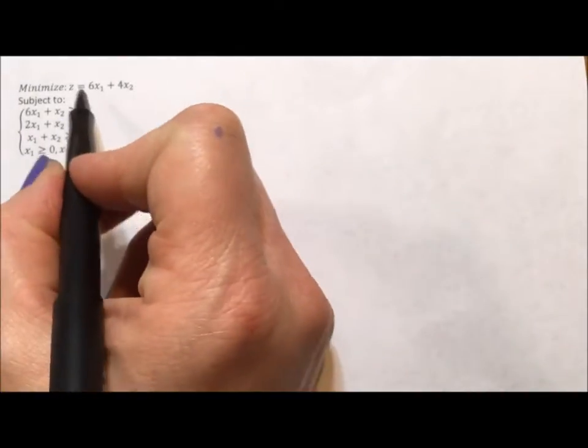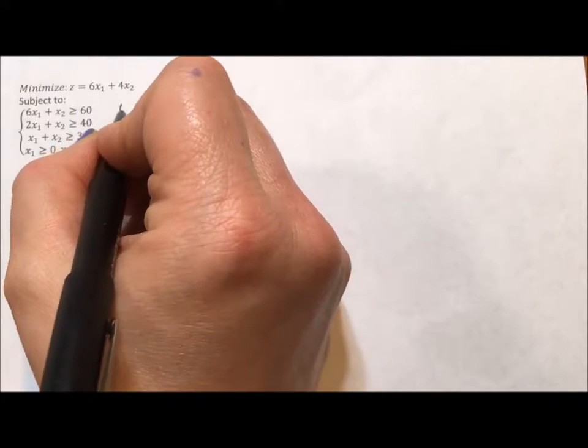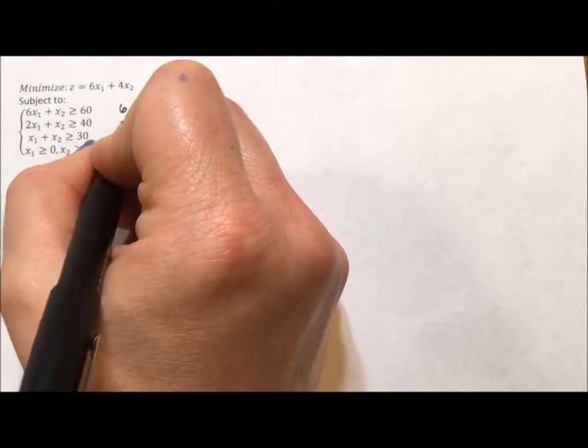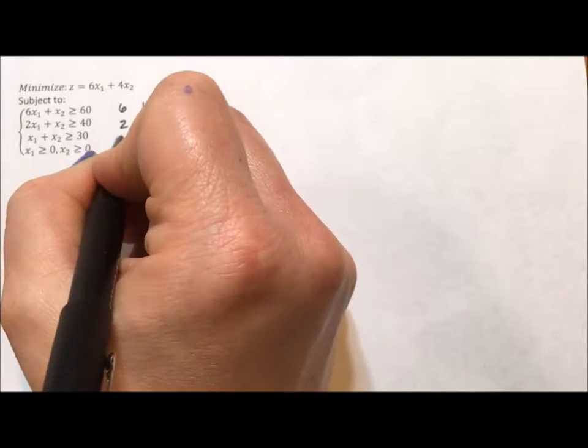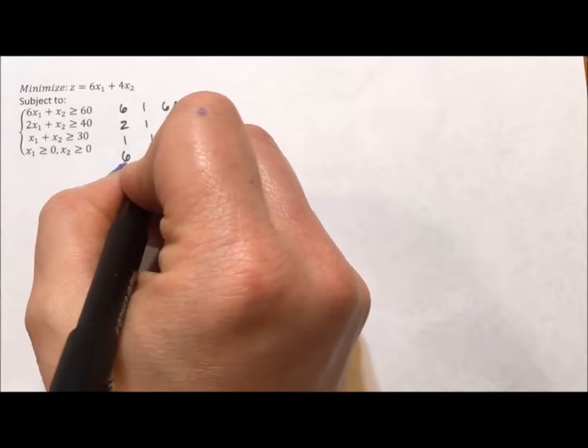The setup starts with taking our system of equations and making an augmented matrix. So 6, 1, 60, 2, 1, 40, 1, 1, 30. We're going to add what we're trying to minimize to our list, 6, 4, 1.